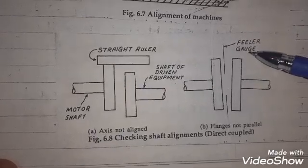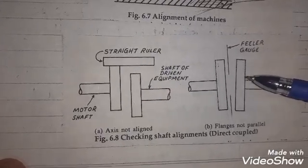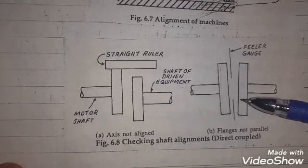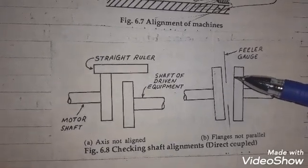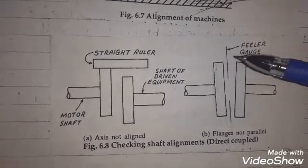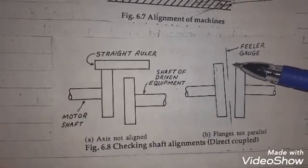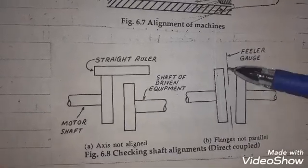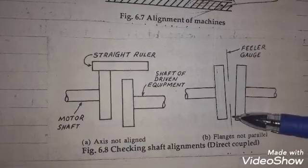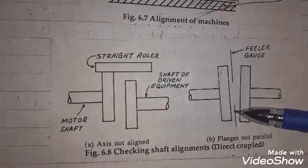For that we have to use the filler gauge. Filler gauges are made from steel ruler-like material, having 0.5 mm to 2 mm thickness. Put that filler gauge inside the gap between these two flanges. If it goes throughout the length easily, indicating that the flanges are parallel.